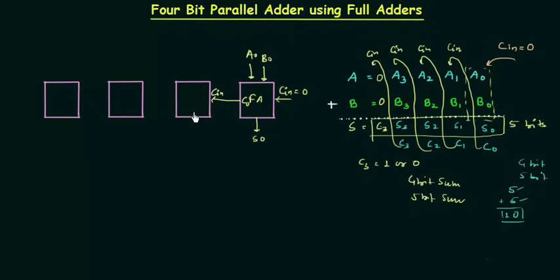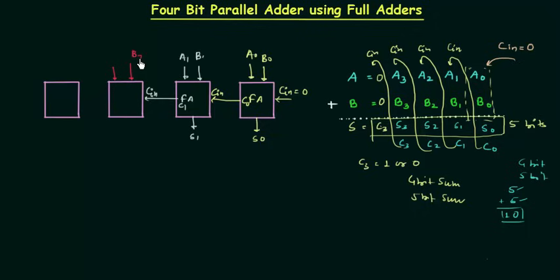C0 acts as the input carry to the next full adder. Using this second full adder we add B1 and A1, getting S1 as the sum and carry output C1. C1 then acts as input carry for the next full adder, which is used to add B2 and A2, giving sum S2 and carry output C2.